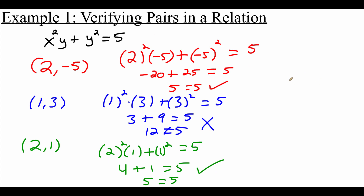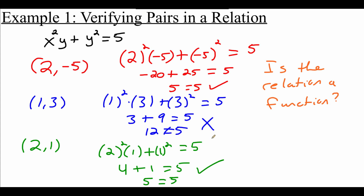But now let's stop and think about this — does our relation represent a function? What we should notice from the ordered pairs is that if we look at the ones that worked, we had the same exact x value being matched up with two different y values, and that violates the rules of being a function. If we were to graph these out and do our vertical line test, we would have a vertical line passing through two separate points because these points have the same x value but different y values. So this one is definitely not a function.